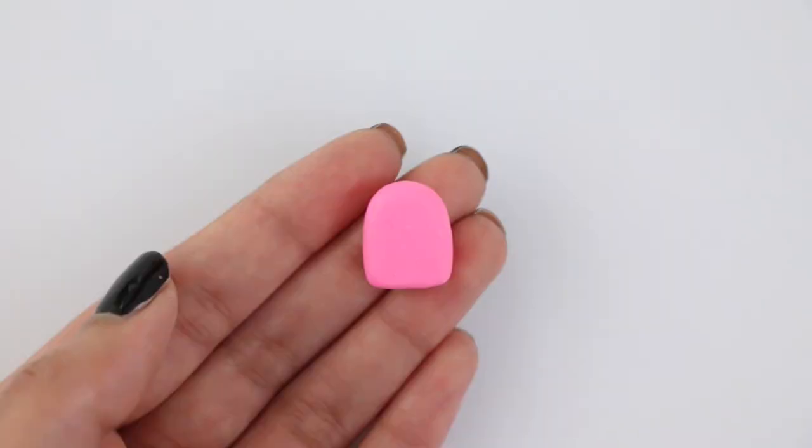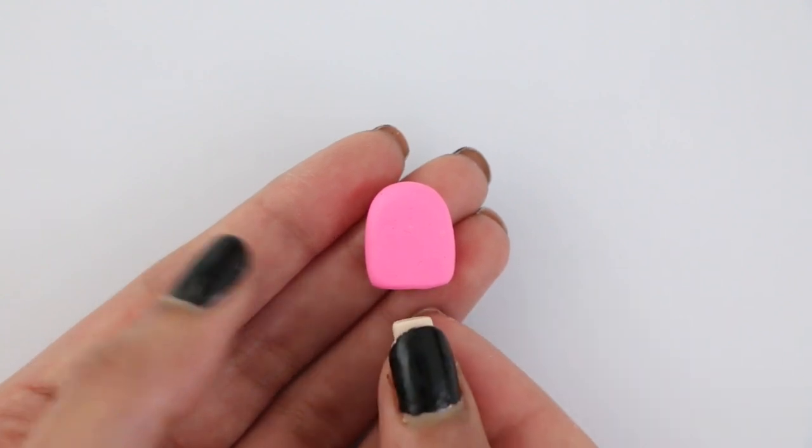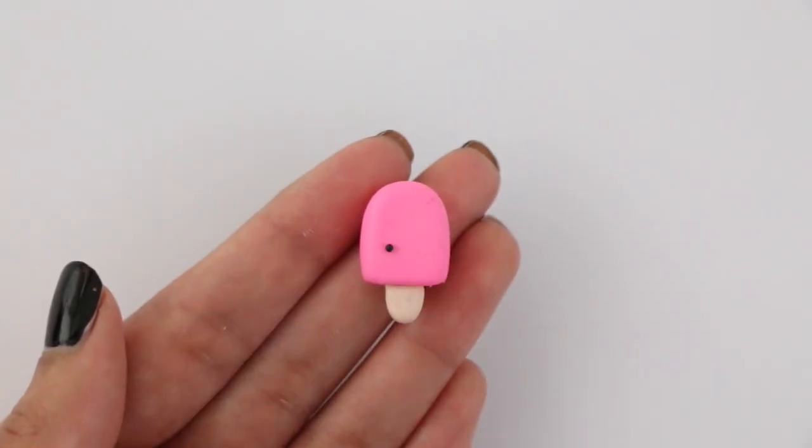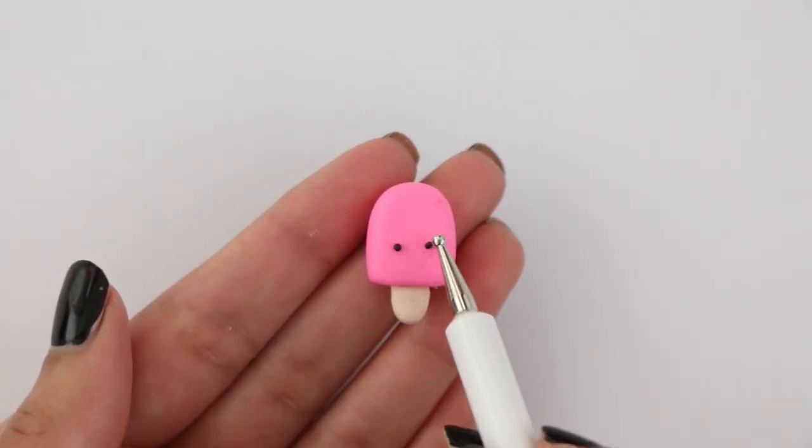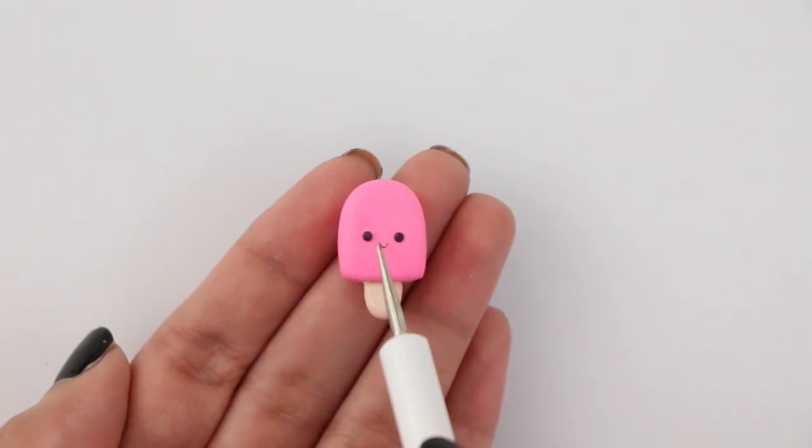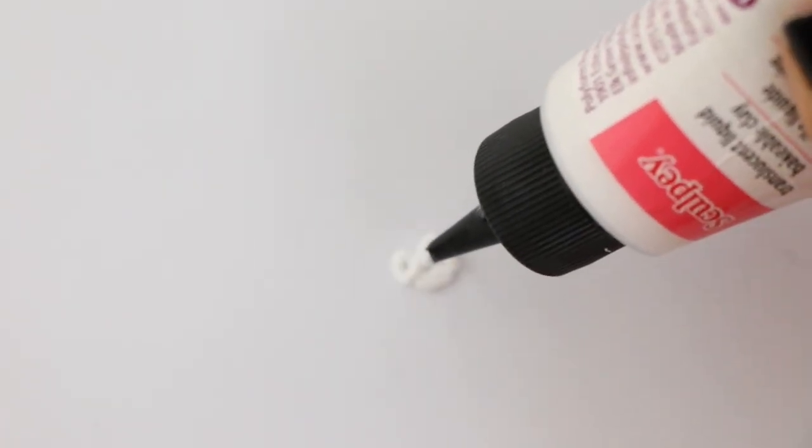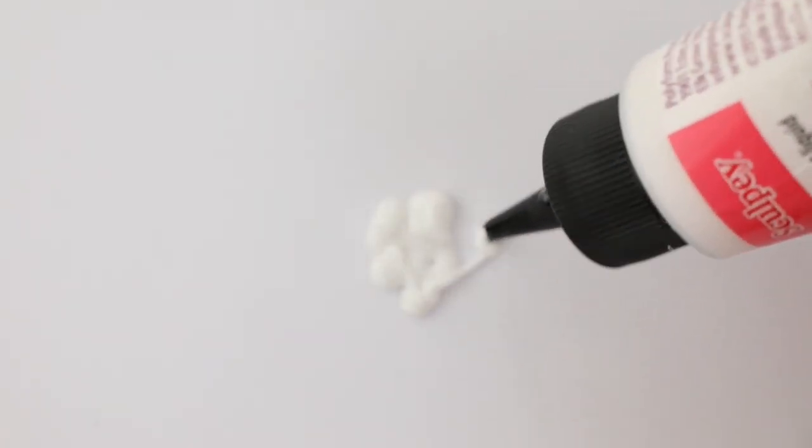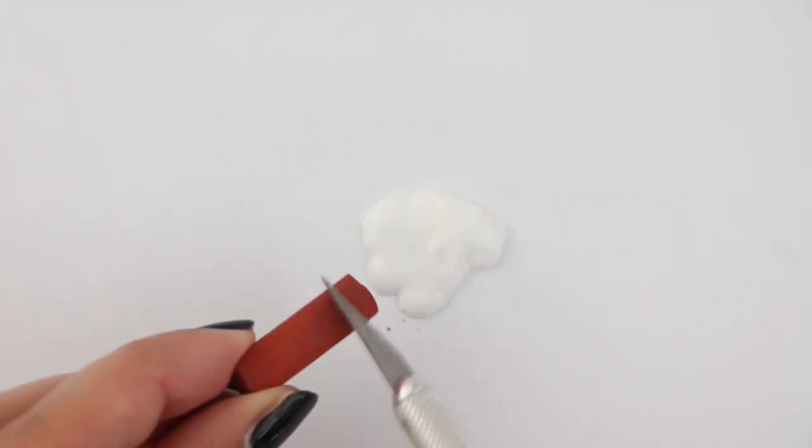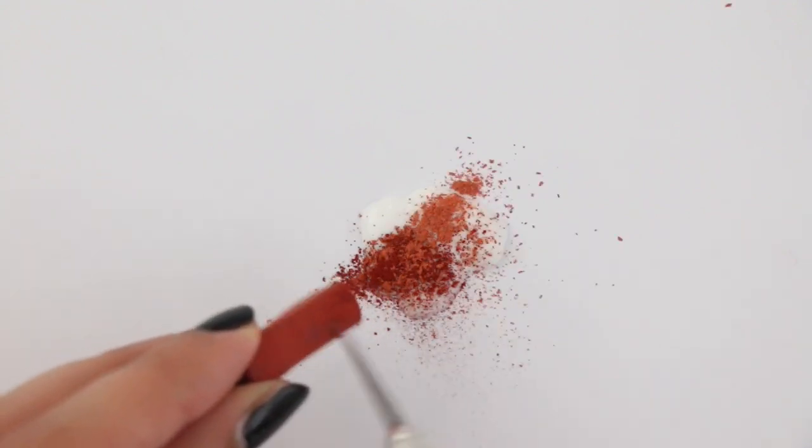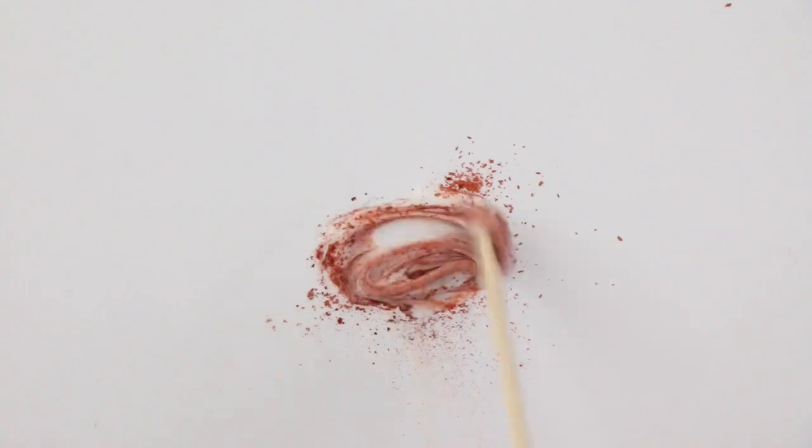So I'm just attaching that to the popsicle. You can also use a little bit of translucent liquid clay if you want to make sure that the stick stays in place. Using black, I'm adding on the face. You can also use acrylic paint if you don't want to use polymer clay for the face. Now I'm going in with some translucent liquid clay and I'm going to just pour that. Then I took some chalk pastels and I'm going to add that. You can also use brown acrylic paint. It will definitely have a different finish to it, but if you don't have chalk pastels, that works just as fine.